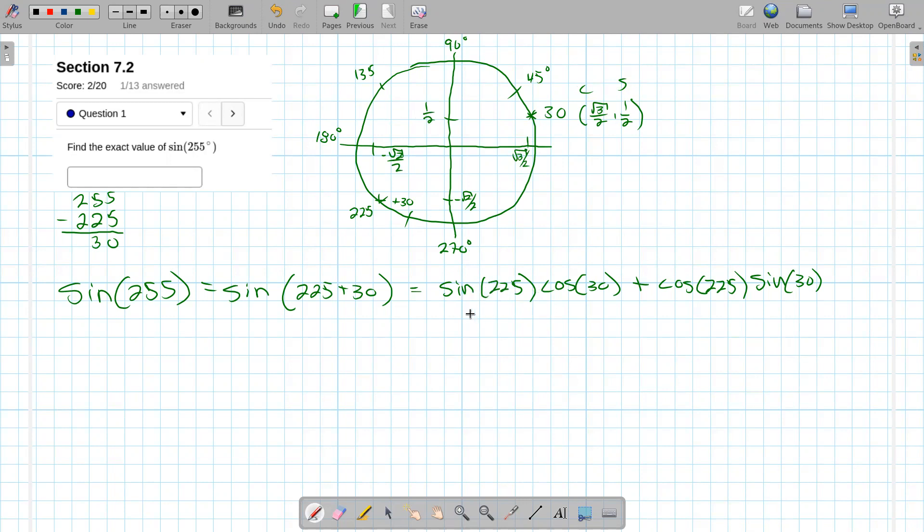All right, so sine of 225 is negative square root of 2 over 2. Cosine of 30 is square root of 3 over 2. Plus cosine of 225 is negative square root of 2 over 2. So sine of 30 is 1 half.